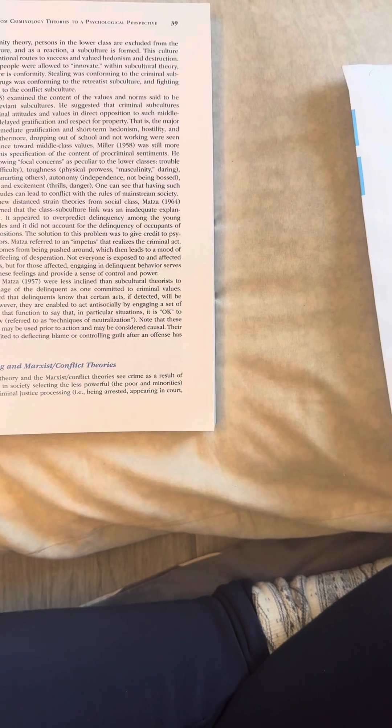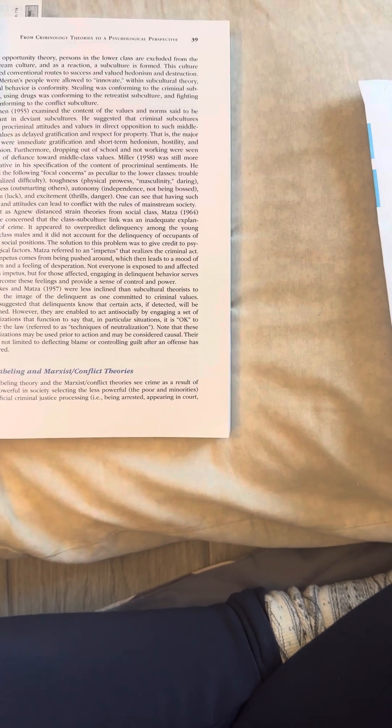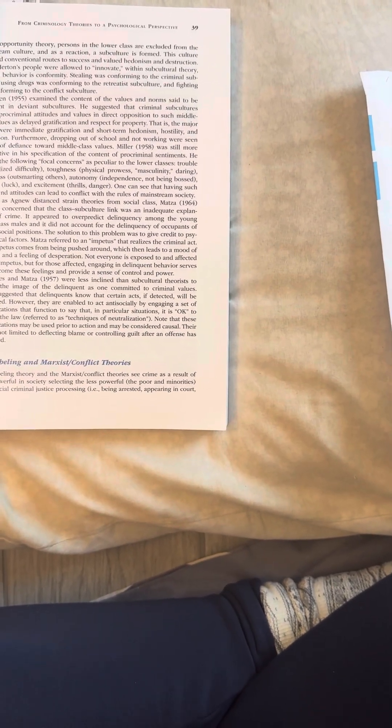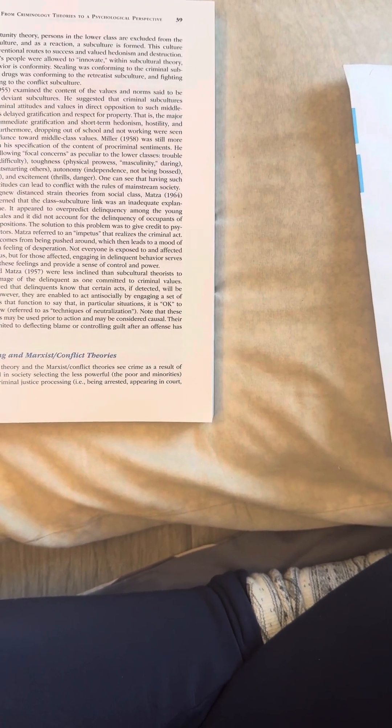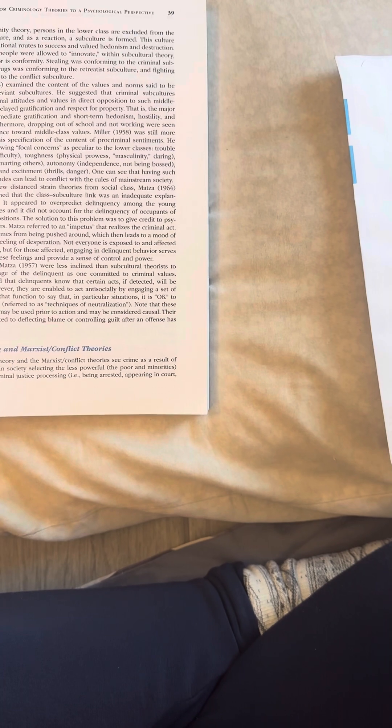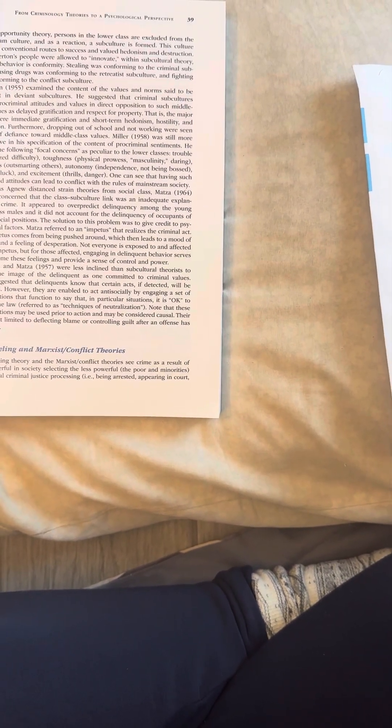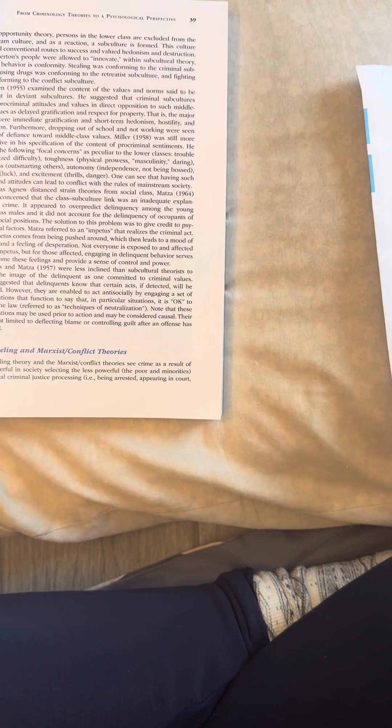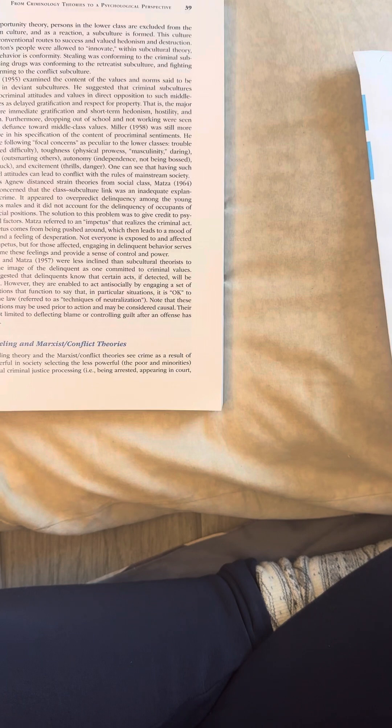However, Sykes and Matza were less inclined than subcultural theorists to accept the image of the delinquent as one committed to criminal values. They suggested that delinquents know that certain acts, if detected, will be punished. However, they are enabled to act antisocially by engaging a set of verbalizations that function to say that in particular situations, it is okay to violate the law, referred to as techniques of neutralization. Note that these verbalizations may be used prior to action, may be considered causal. Their use is not limited to deflecting blame or controlling guilt after an offense has occurred.